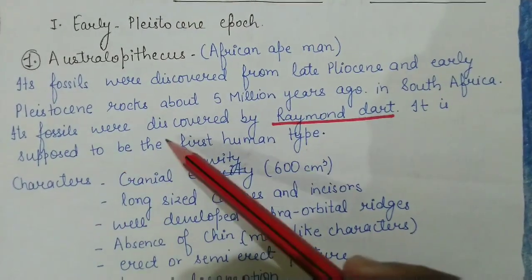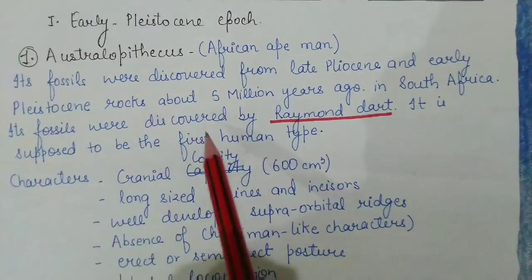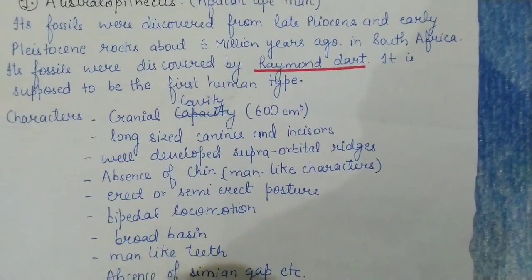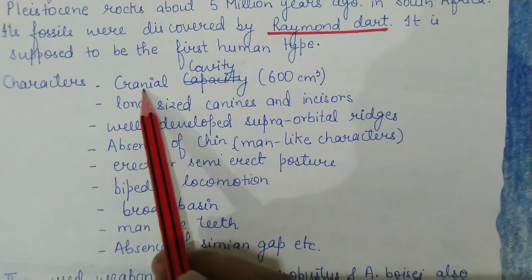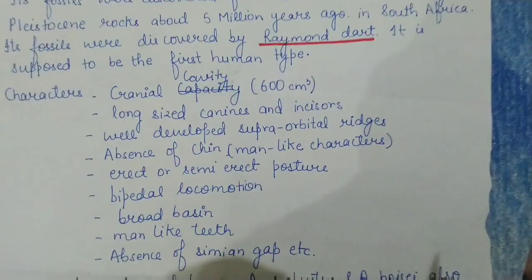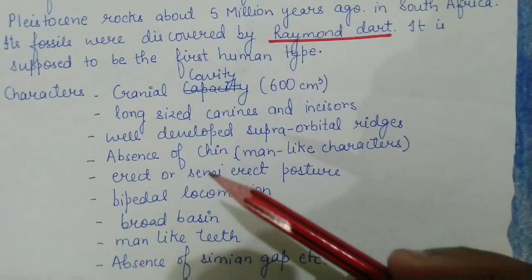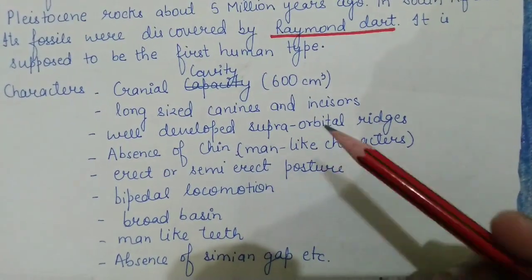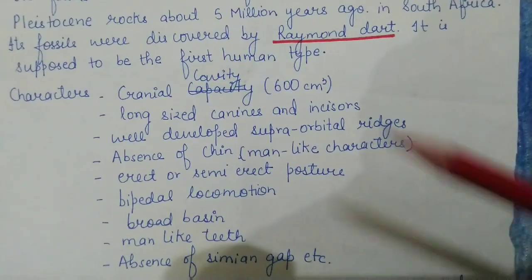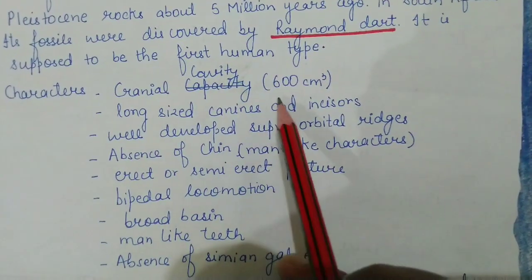The characters that Australopithecus had: first is the cranial cavity of 600 cm³. Remember, as the cranial cavity increases, intelligence increases with every further human type. So as we study each human type, cranial capacity will show more, indicating evolution has taken place.